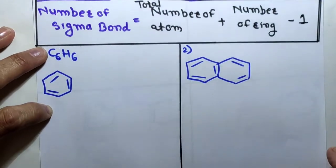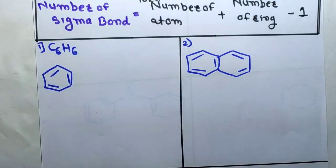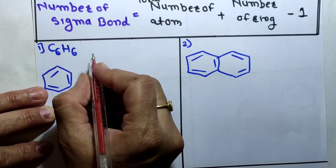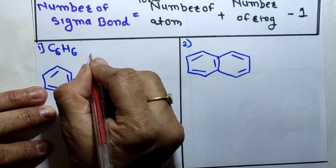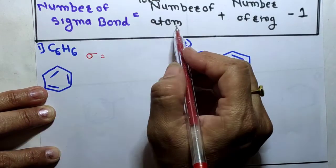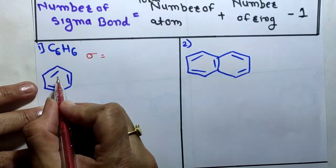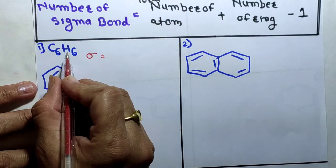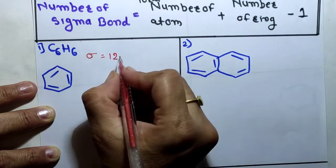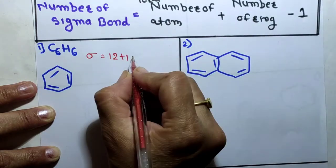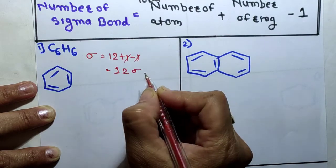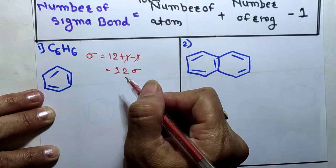Now let's solve the examples. First example: C6H6, which is benzene. To calculate the sigma bonds, we use the formula. Total number of atoms: carbon 6 + hydrogen 6 = 12 atoms. Number of rings is 1, minus 1 — the 1 and 1 cancel. Therefore we get 12 sigma bonds in benzene.